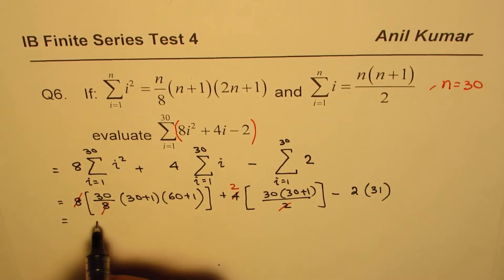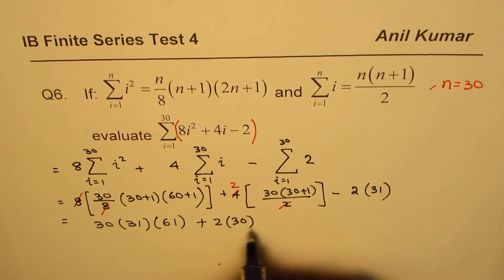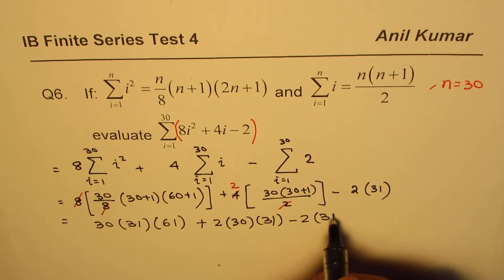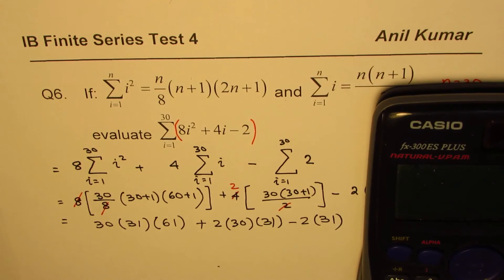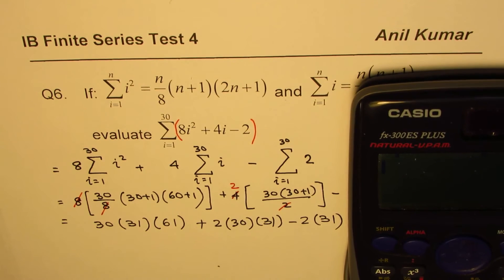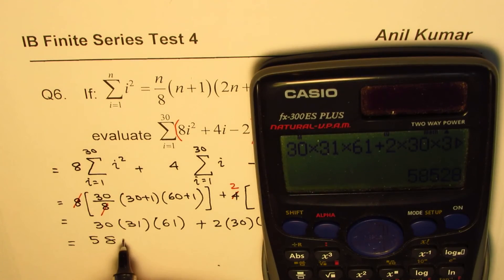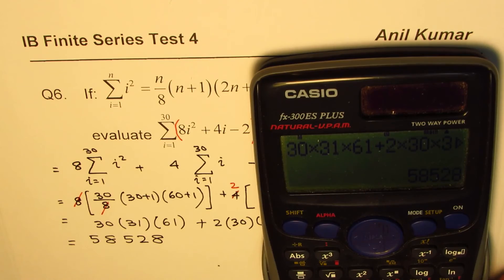The 8 and 6 simplify, giving us 30 times 31 times 61, plus 2 times 30 times 31, minus 2 times 31. Using a calculator — or even by hand since it's not too difficult — we get 30 × 31 × 61 + 2 × 30 × 31 − 2 × 31, which equals 58528. That's the answer: 58528.